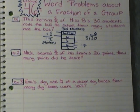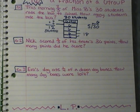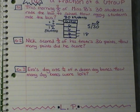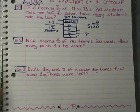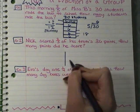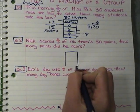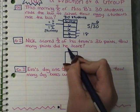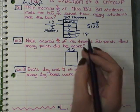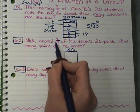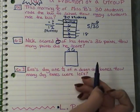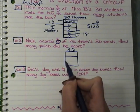The next problem says: Nick scored two-thirds of his team's 36 points. How many points did he score? Just like before, I'm going to make a rectangle and write 36 up here to remember what I'm out of. Then I look at my denominator — it's three, so we're out of three sections.